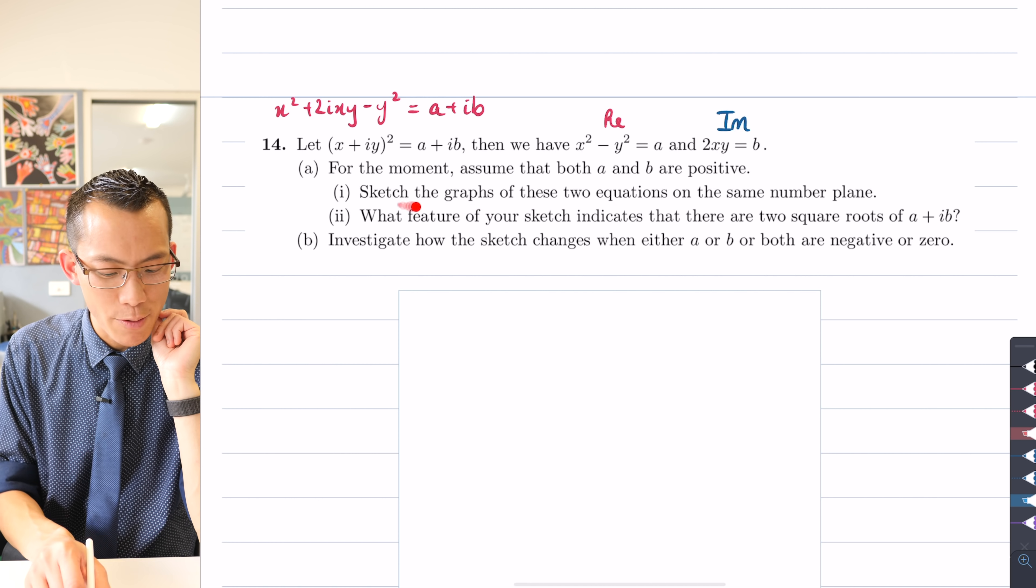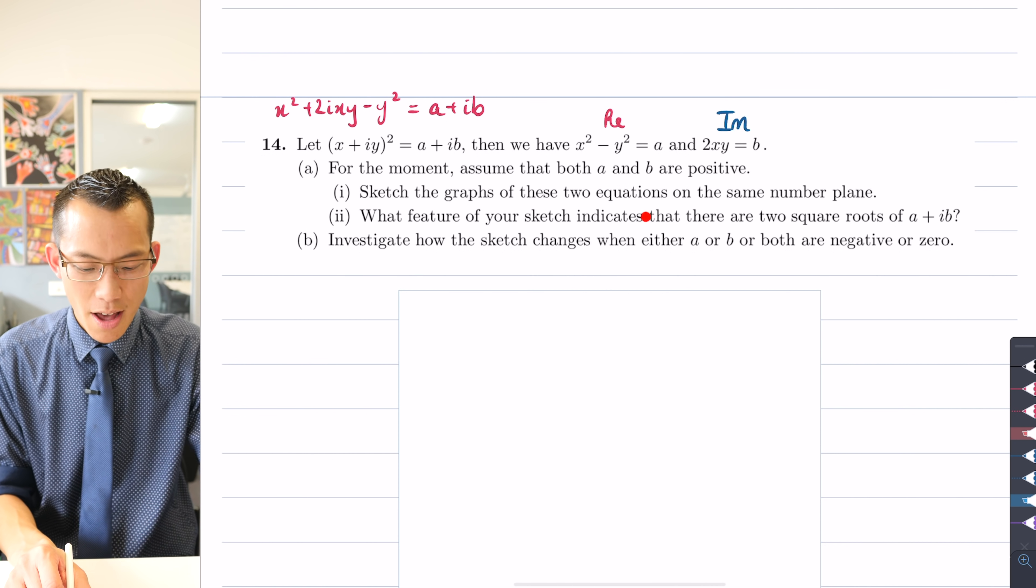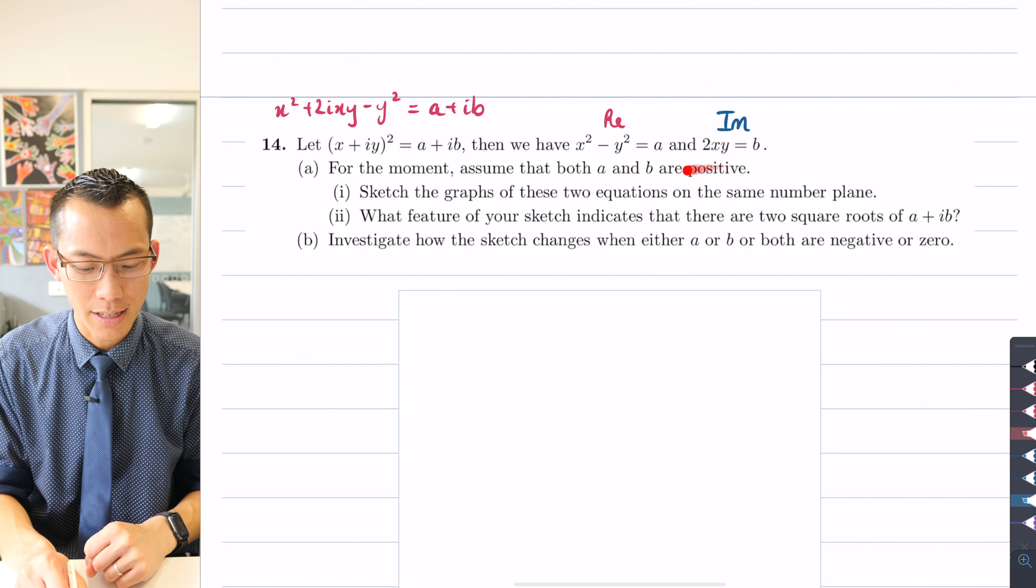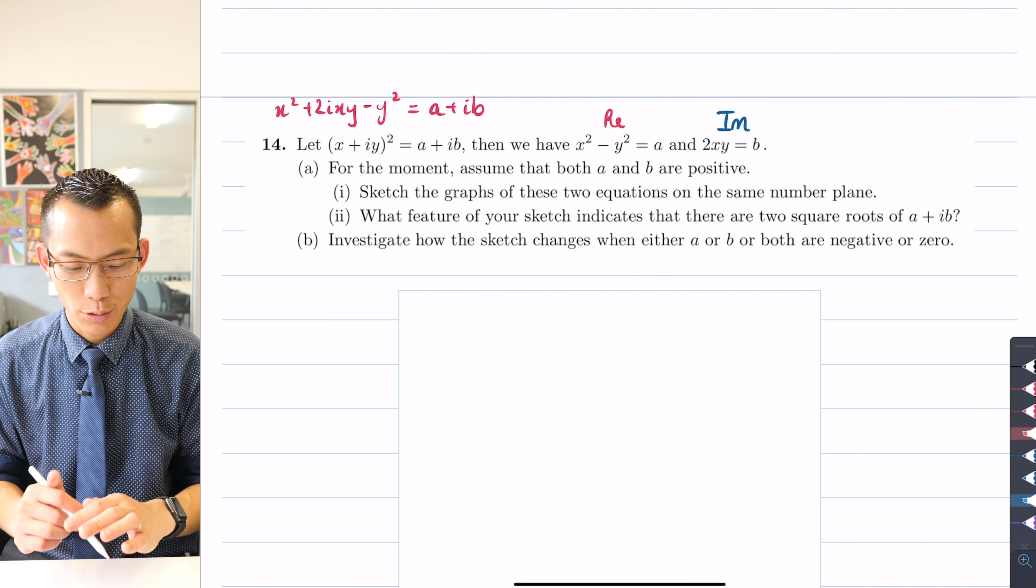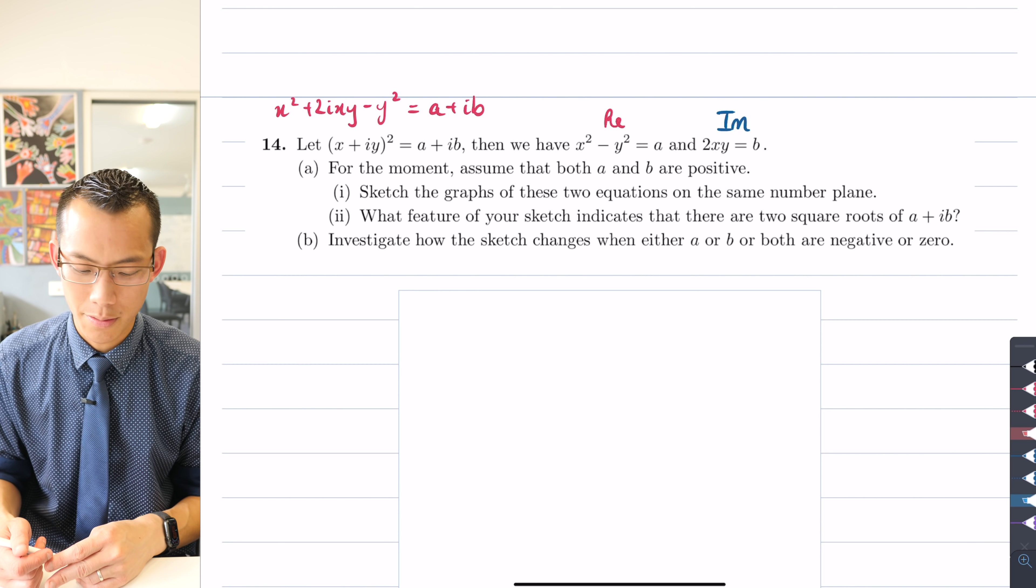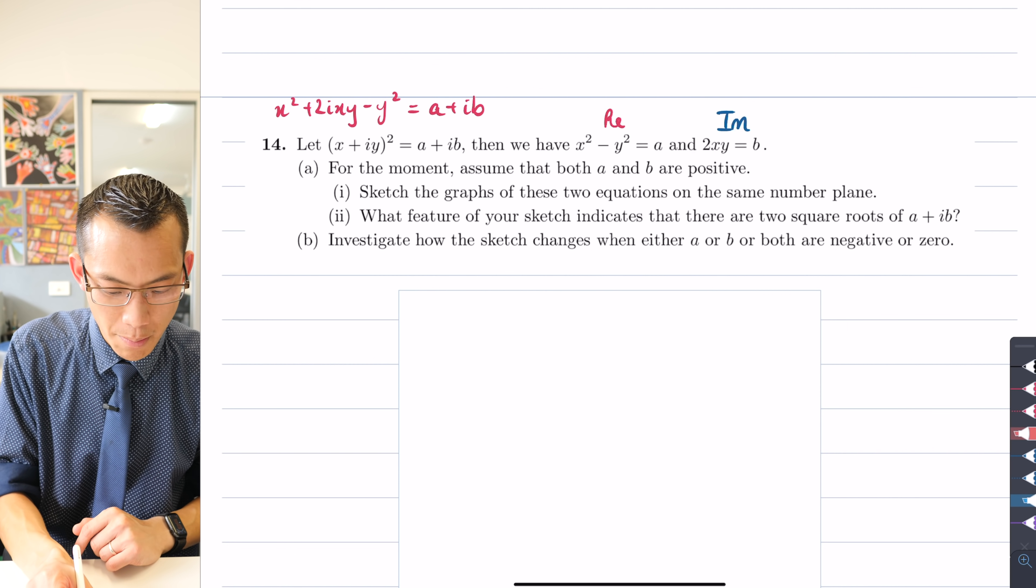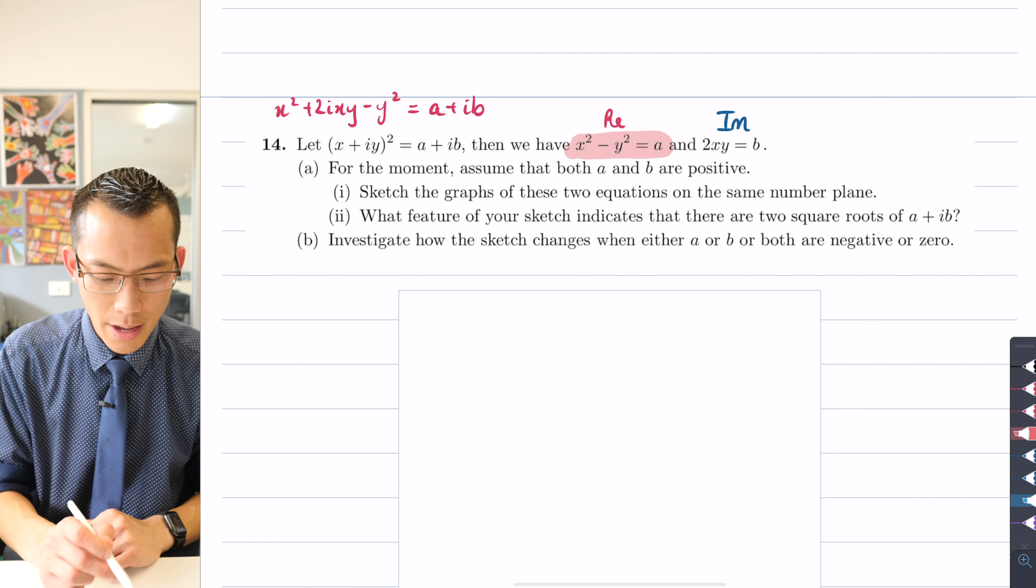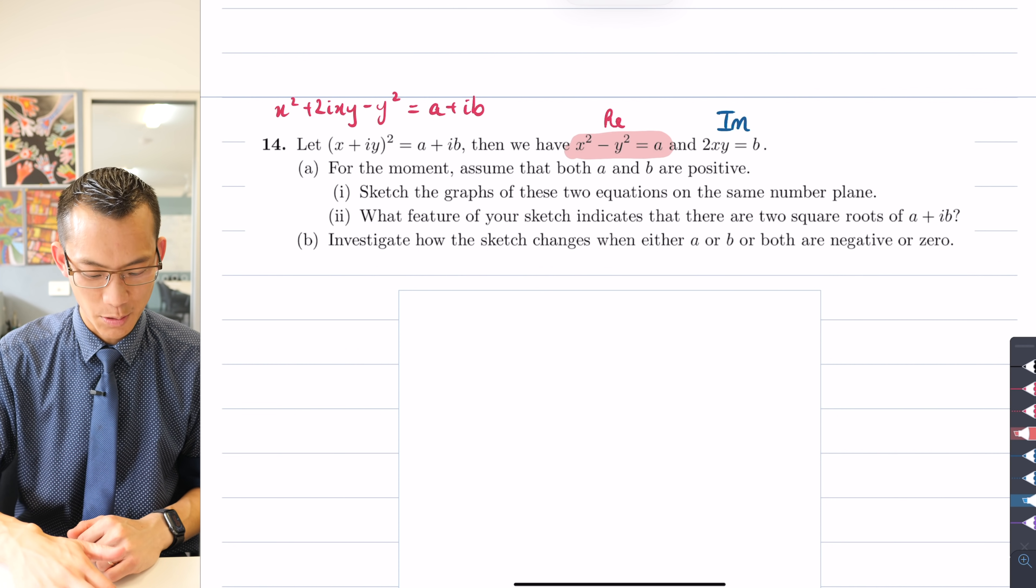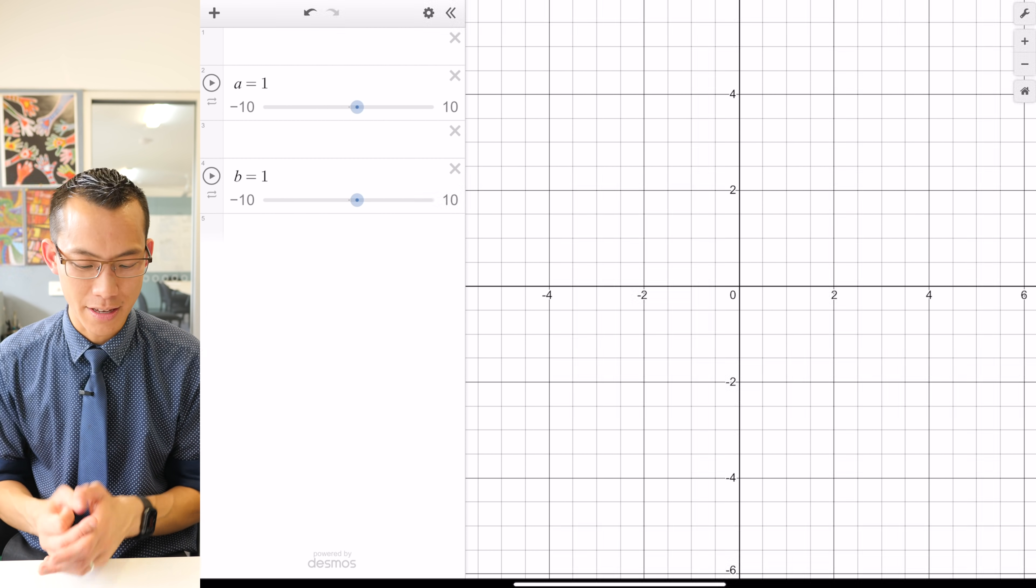We haven't been sketching graphs recently on a Cartesian plane, but we need to call back all that knowledge and skill to handle these two. So what we're going to have a look at is trying to understand the graphs of these on the same number plane and see what conclusions we can draw from this. The first one, which we got from the real components of the left and right-hand side, is x squared minus y squared equals a.